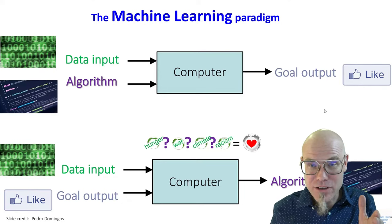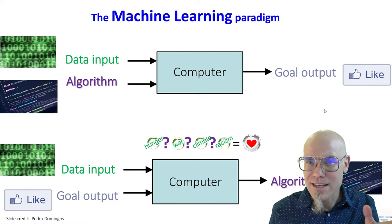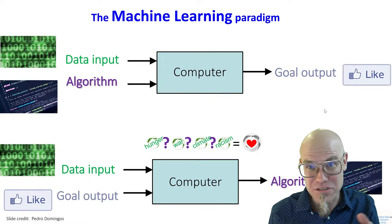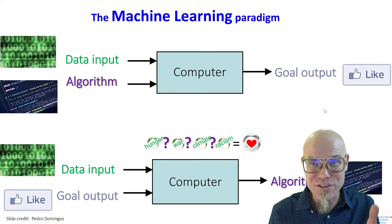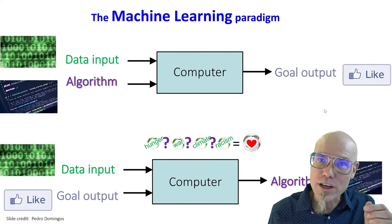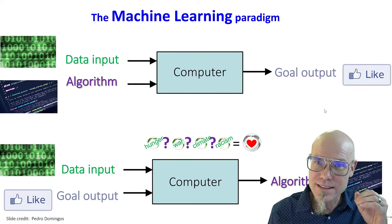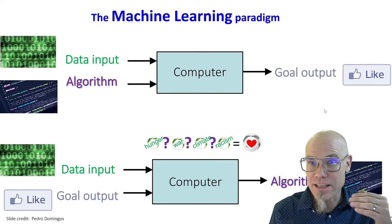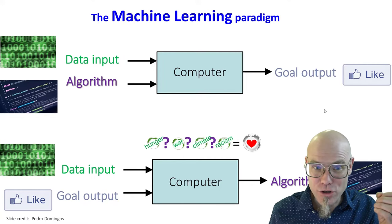We also talked in a previous lecture about how this has been a long time coming — about 70 years. At the beginning, people thought it would be easy; they dedicated two months in the summer to solving these issues. It took one or two generations of researchers biting their teeth into it. What actually drove the big advancements was that data won the day — a lot of data and a lot of computational power that wasn't available before.